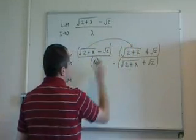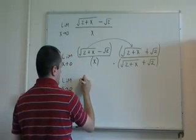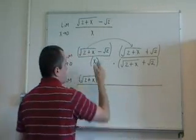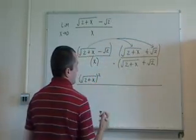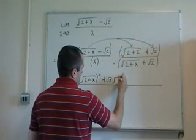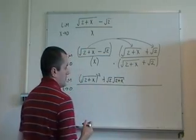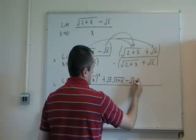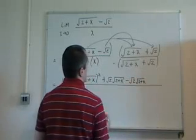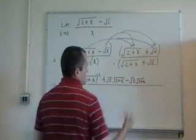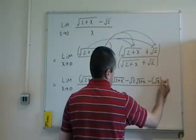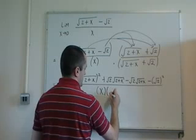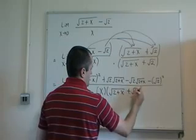The square root of 2 plus x times the square root of 2 plus x will give me the square root of 2 plus x squared. The square root of 2 plus x times root 2 will give me root 2 times the square root of 2 plus x. Minus root 2 times this will give me minus root 2 times the square root of 2 plus x. And minus root 2 times root 2 will give me minus root 2 squared.